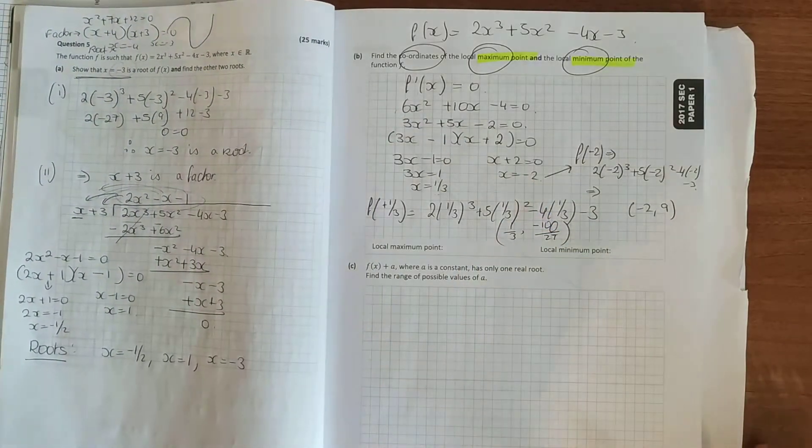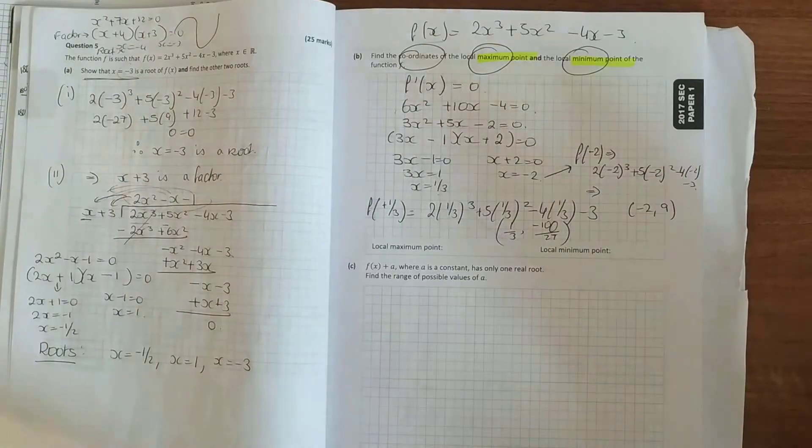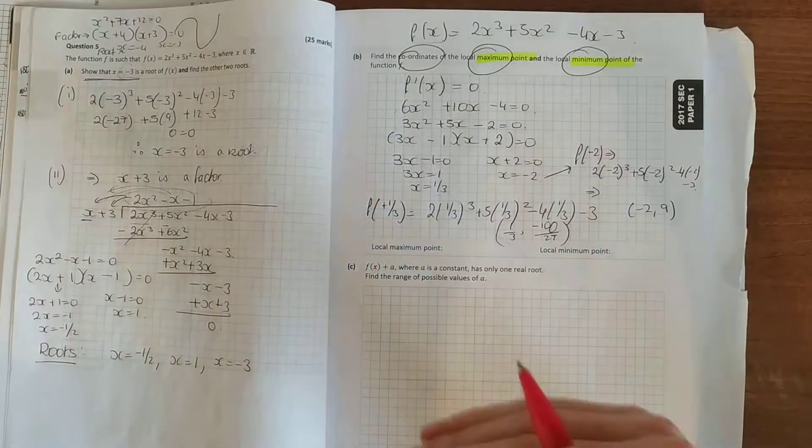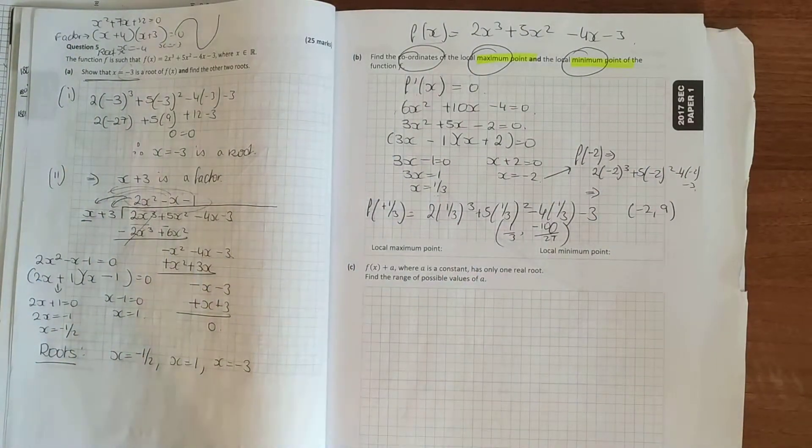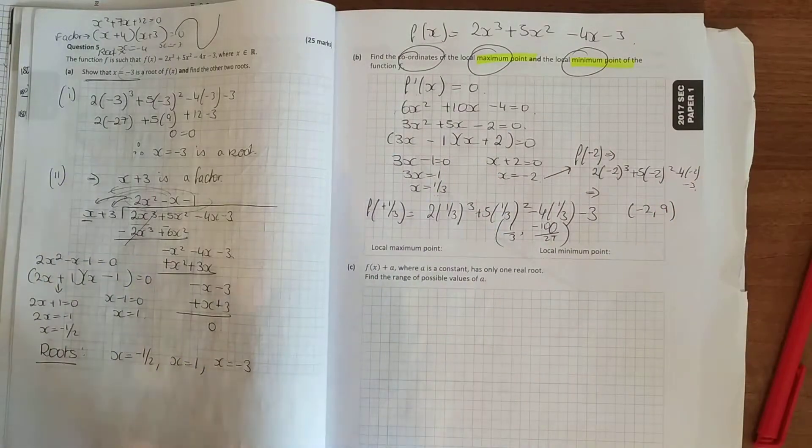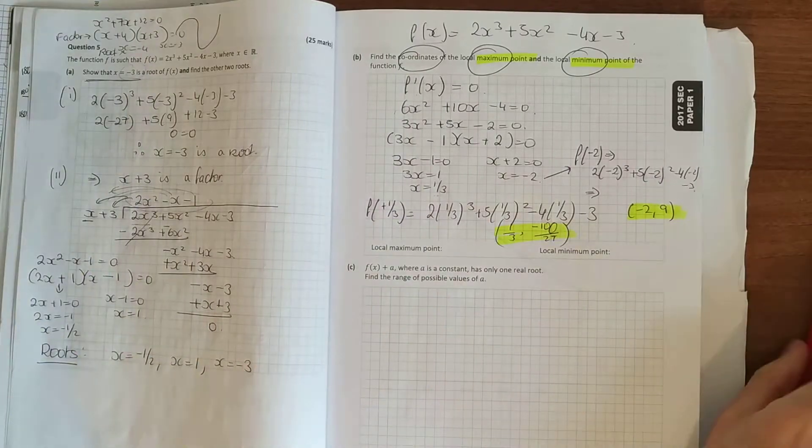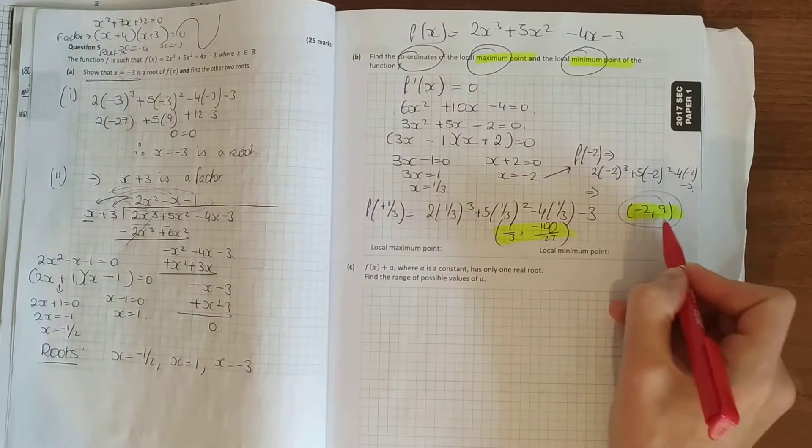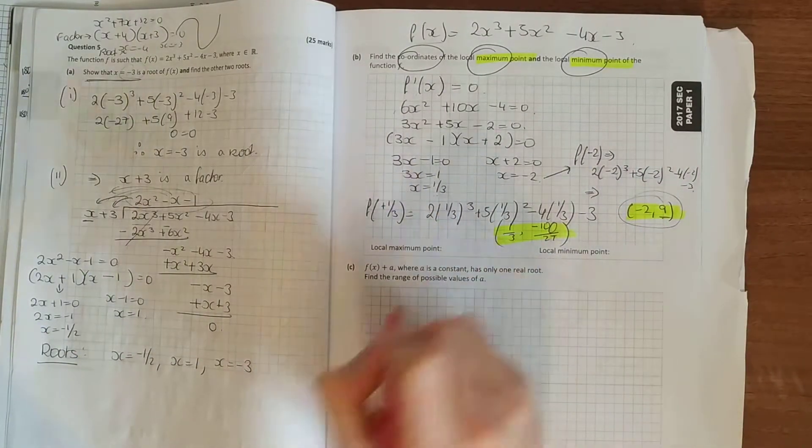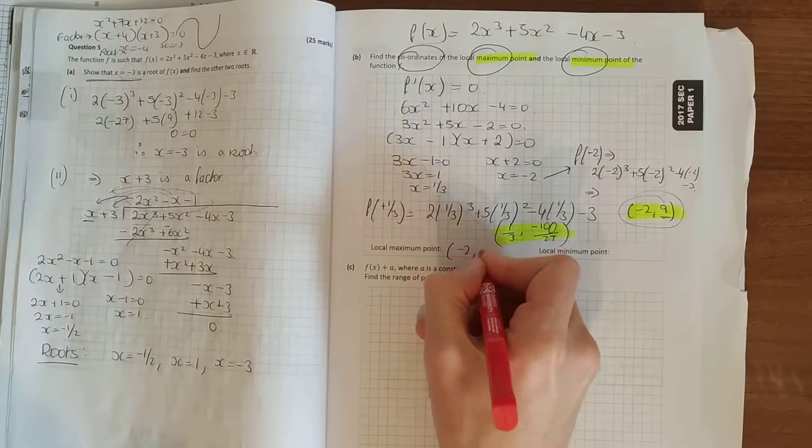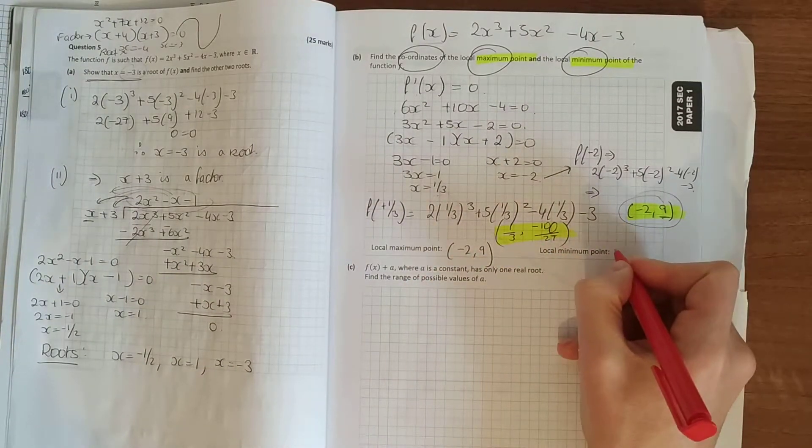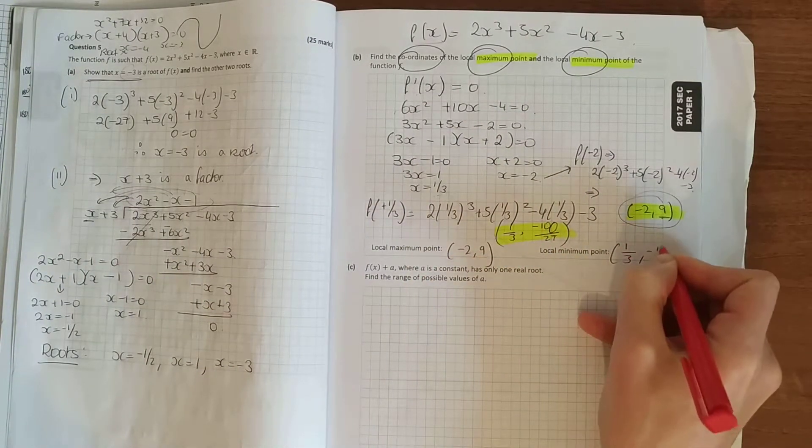Now for this one, the maximum point. The maximum point is obviously going to be the higher up point, the higher y value, the greater the y value. The two points that we have here, which one is the higher y value? The y value here is 9. So that's going to be your local maximum point, minus 2, 9. While your local minimum point is a third, minus 100 over 27.